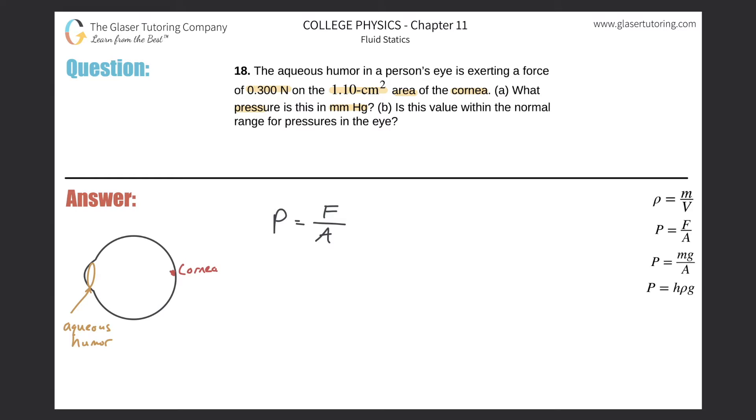The pressure here is going to be equal to the force of 0.3 newtons divided by the area. They gave it to us in centimeters squared, but we need it in meters squared, so we can do a simple conversion.